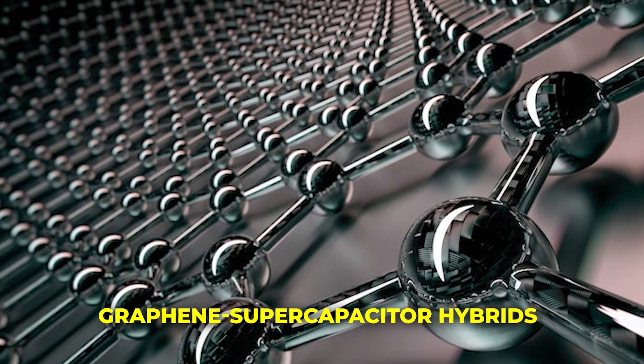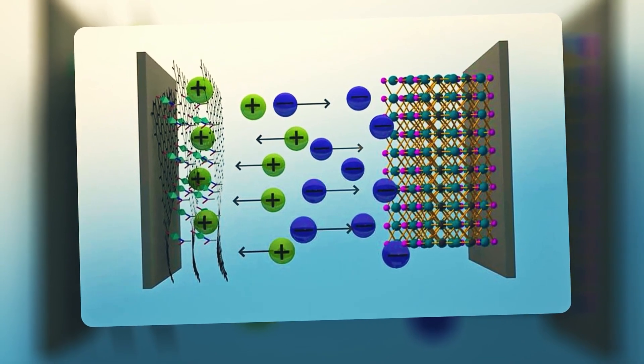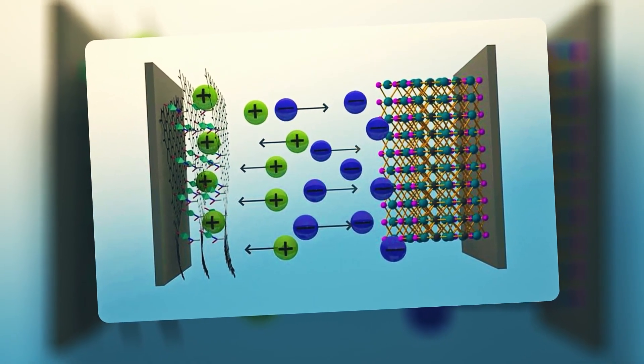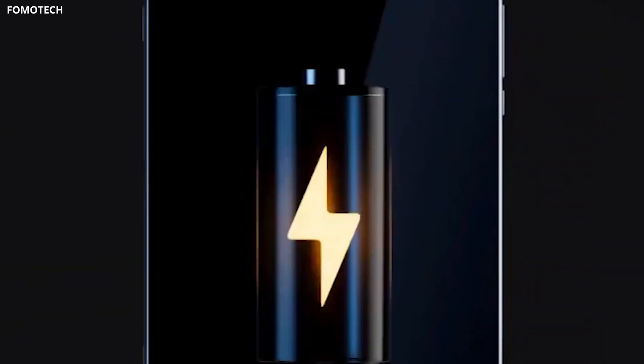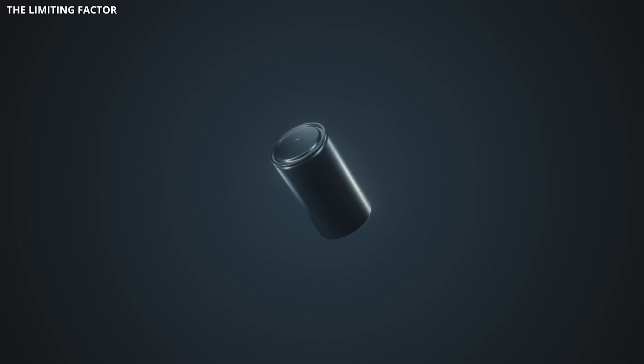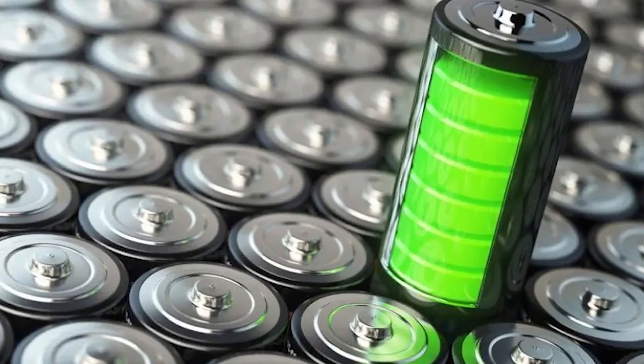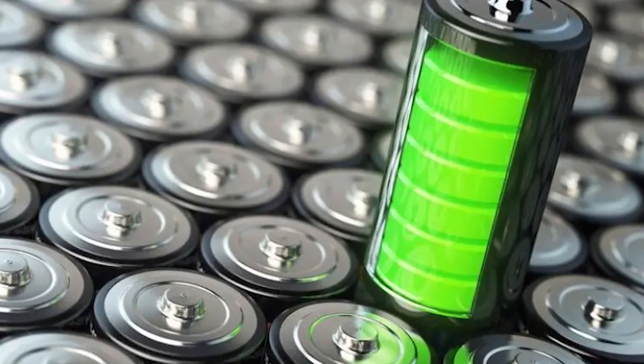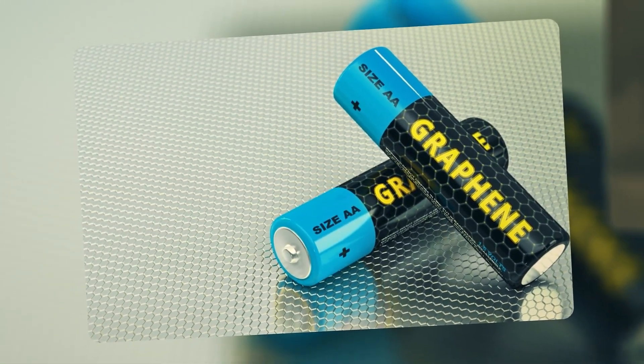Then there are graphene supercapacitor hybrids. These combine the high energy density of a battery with the rapid charge and discharge of a capacitor. The result is something that can charge in seconds and last tens of thousands of cycles, though energy density is still lower than pure batteries. So when a company says they're launching a graphene battery, you have to ask which kind, because the performance varies a lot depending on the design.